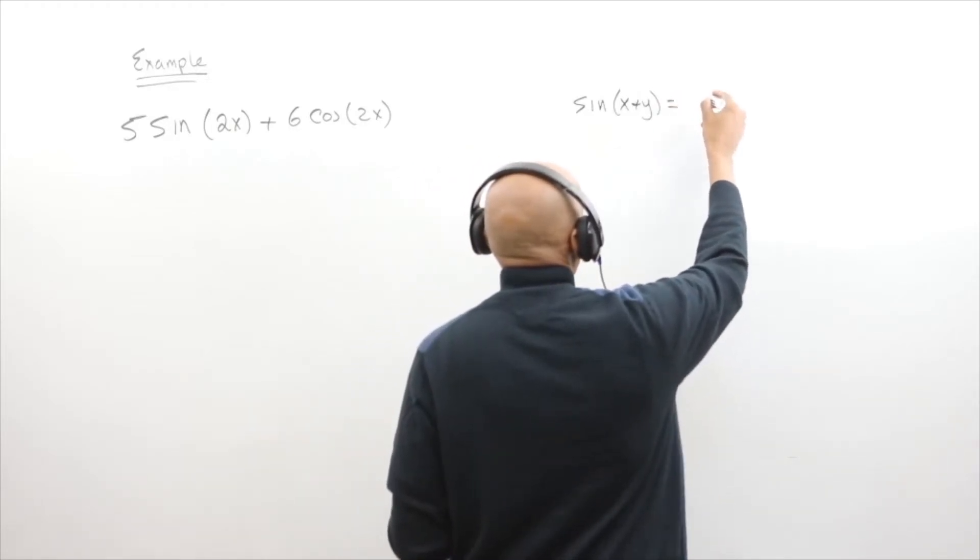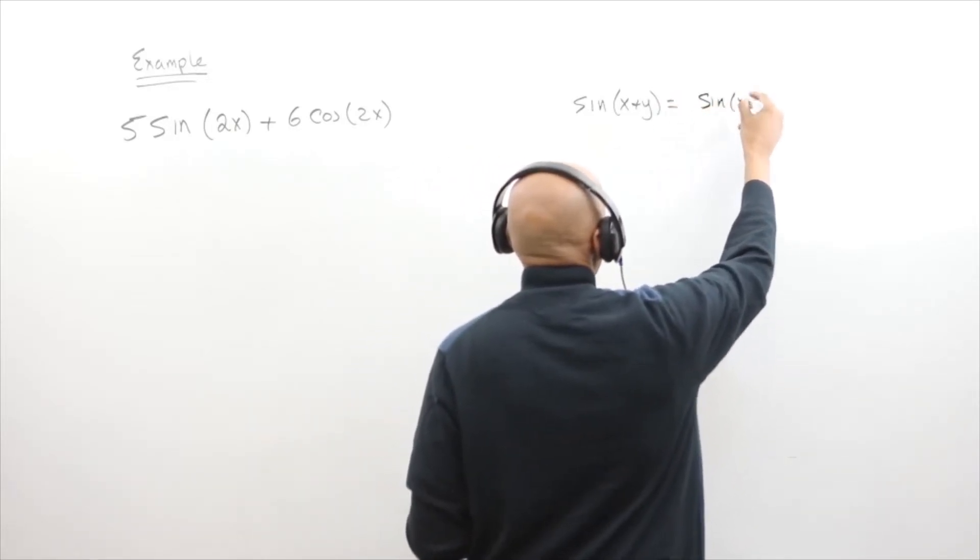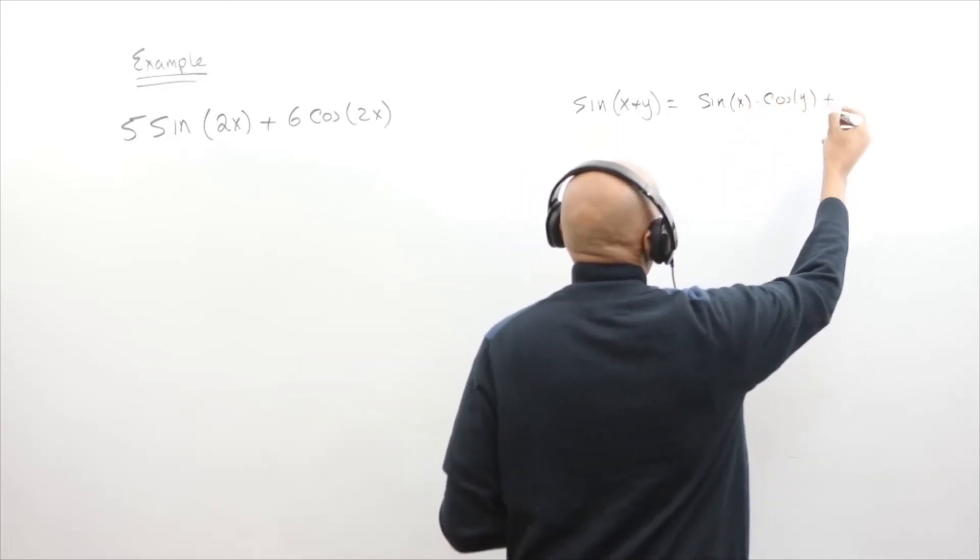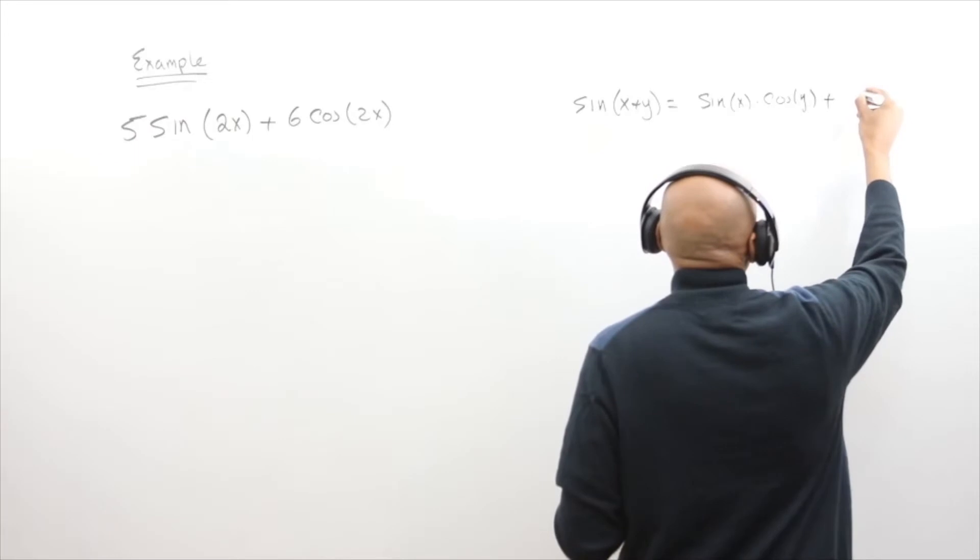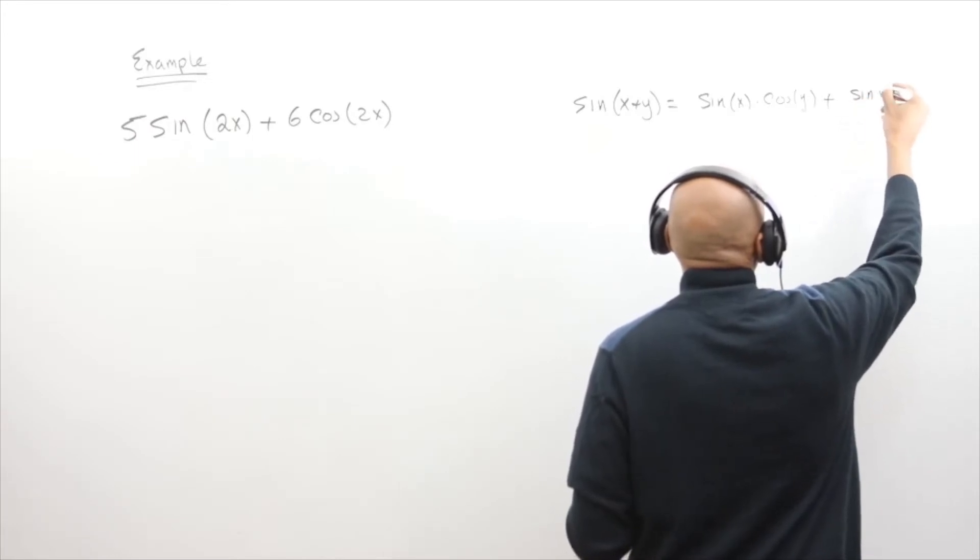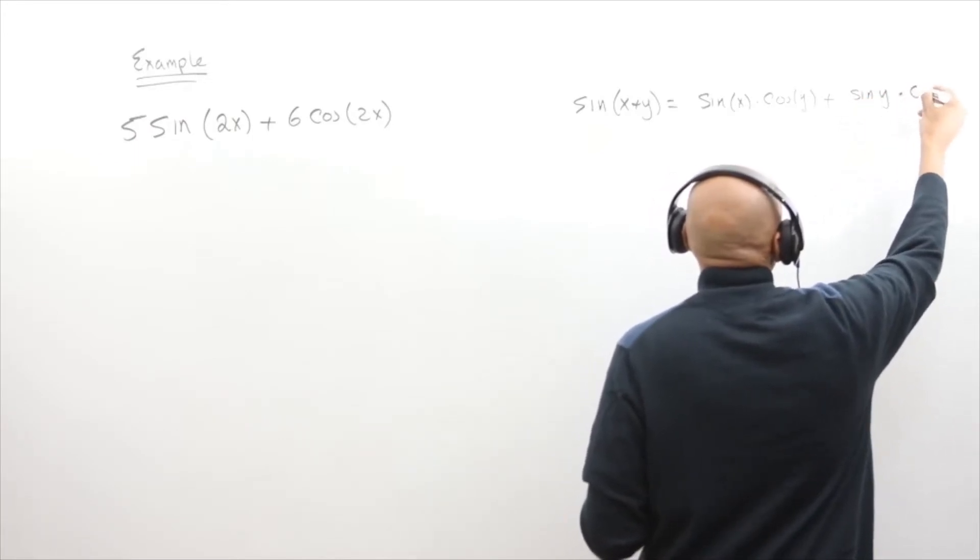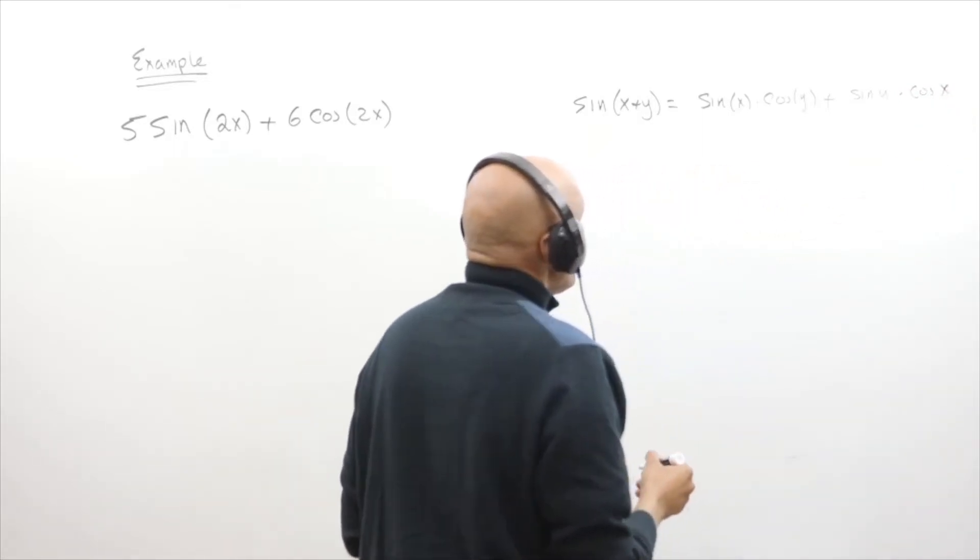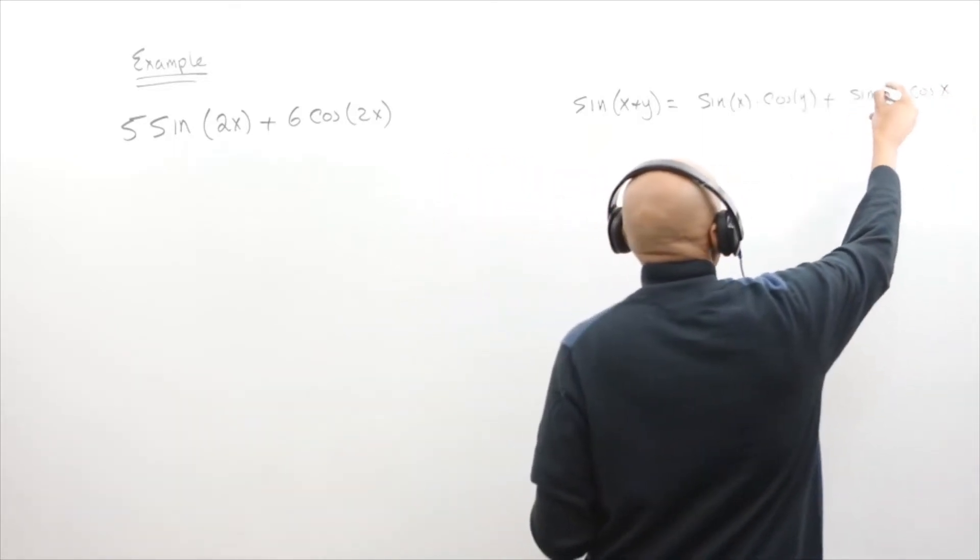So sine of x plus y is sine of x times the cosine of y plus the sine of y times the cosine of x. And let's balance out the parentheses.